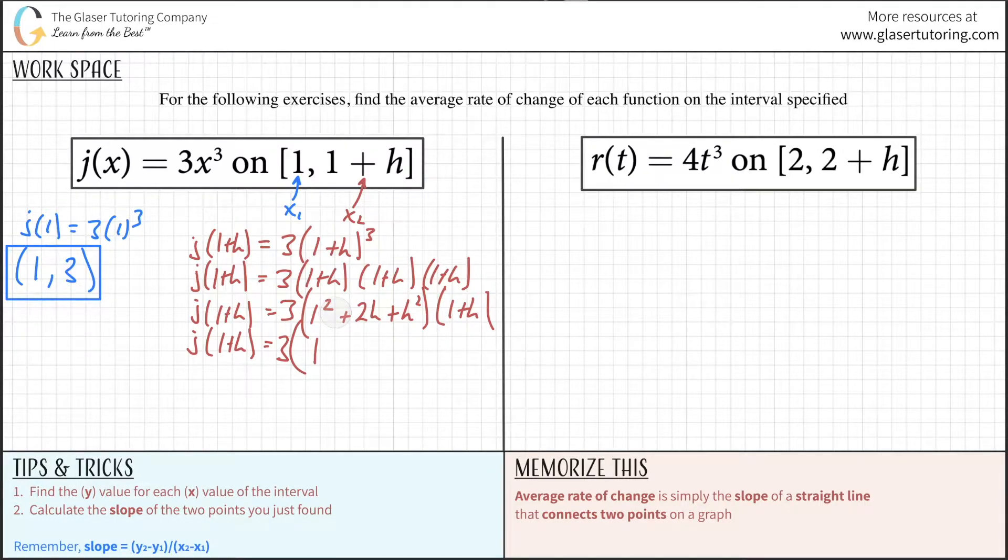That's going to be plus one times h which is h. Then two h times one is 2h, and 2h times h is 2h squared. Then h squared times one is h squared, and h squared times h is h cubed.